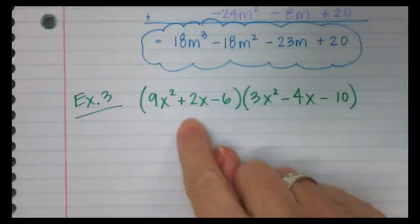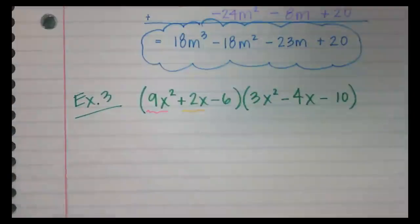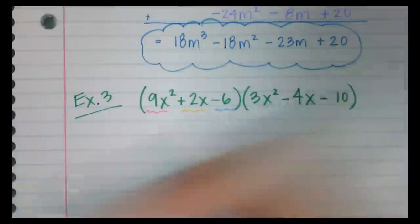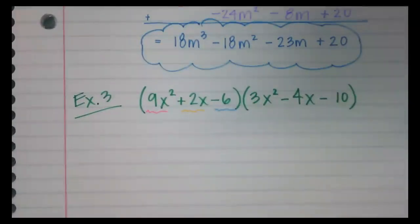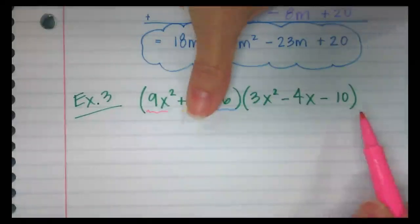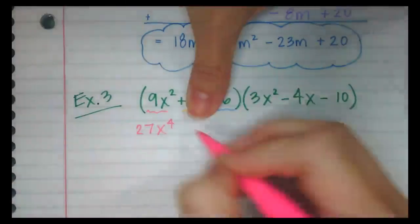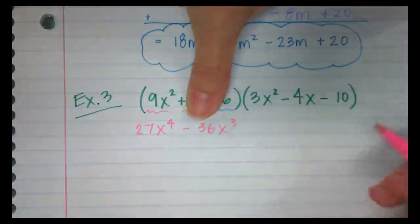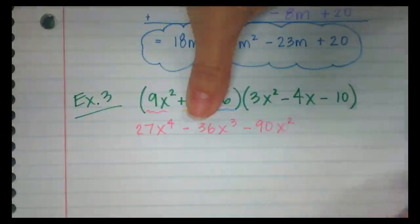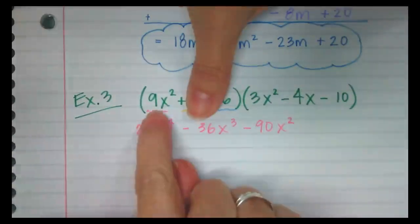We're distributing a trinomial, so that means we need to do the distributive property three times. I'm going to distribute the 9x squared, then the 2x, then the negative 6. First, I need to multiply 9x squared to the entire trinomial — everybody here gets multiplied by 9x squared. That gives me 27x to the 4th minus 36x cubed minus 90x squared. So I distributed 9x squared to each term in 3x squared minus 4x minus 10.